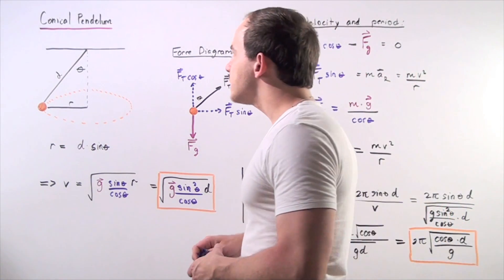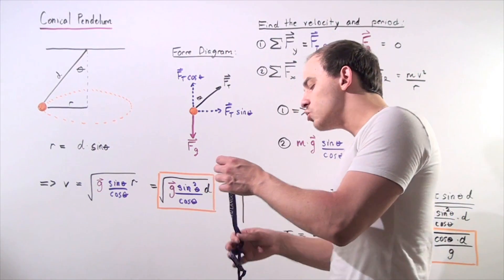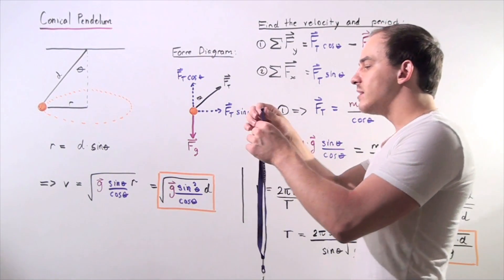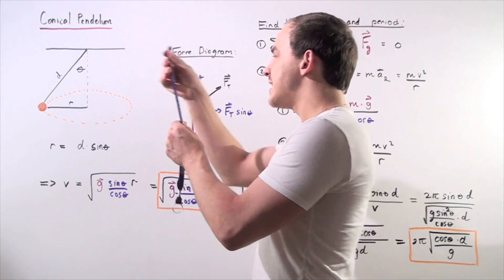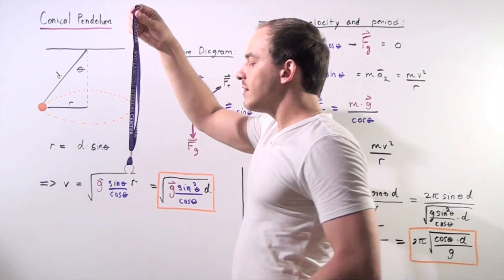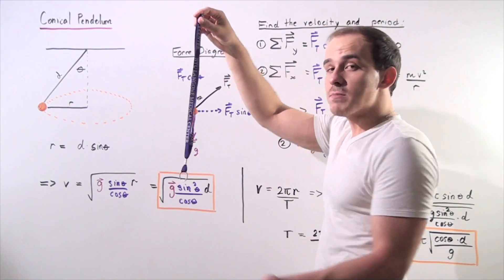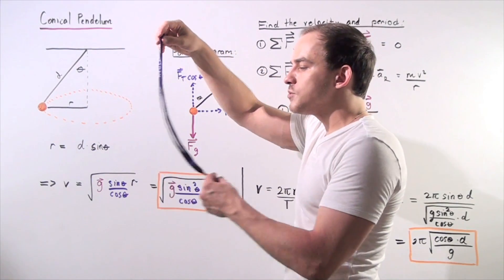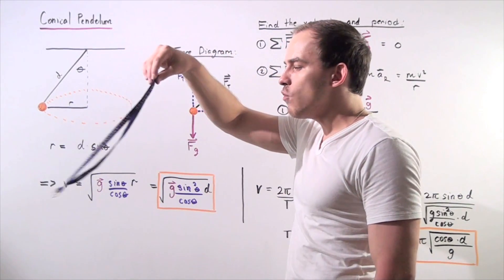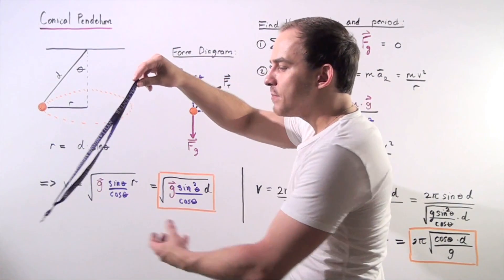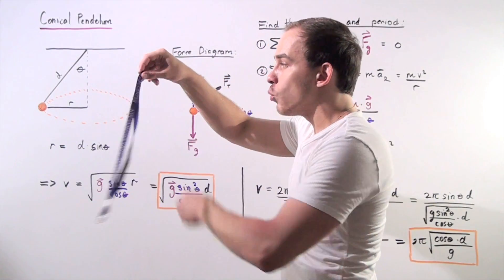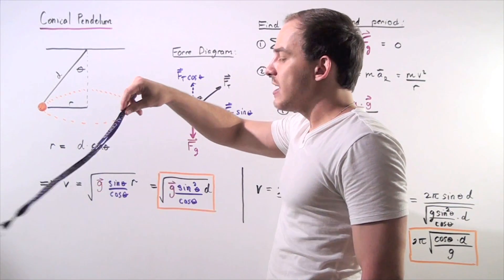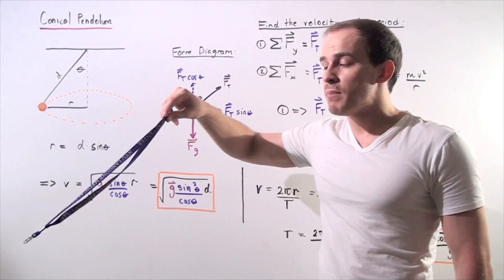What exactly is a conical pendulum? Let's suppose we take a massless rope of distance d, attach one end to the ceiling, and attach a ball or some other object to the second end, and let our object rotate as shown. The shape that our moving object creates with this rope is a cone, and that's exactly why this is known as a conical pendulum.